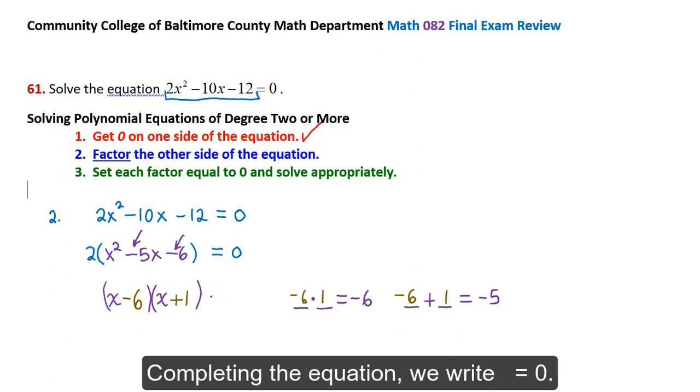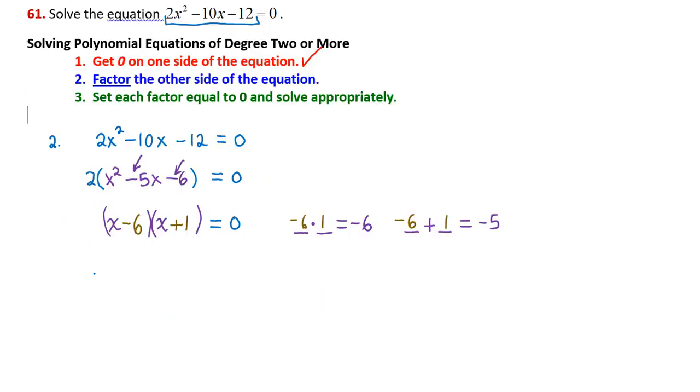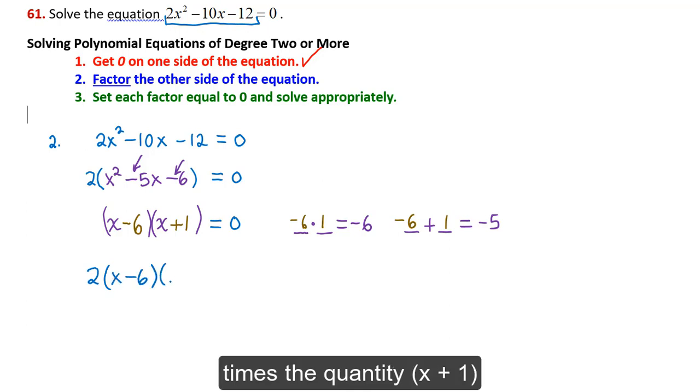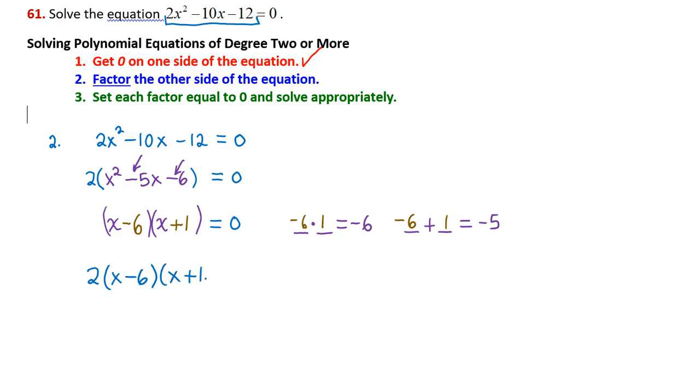We fill these values into the factors. We have x minus 6 times x plus 1. Completing the equation, we write equals 0. Therefore, our factored equation is GCF 2 times the quantity x minus 6 times the quantity x plus 1 equals 0.